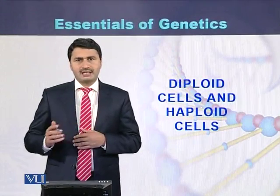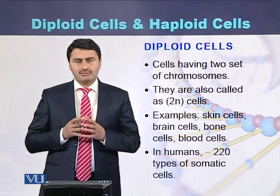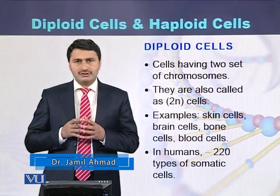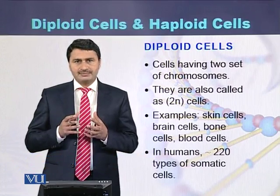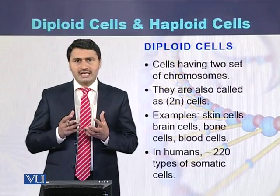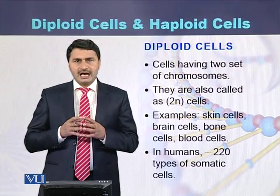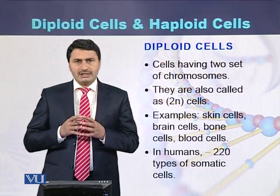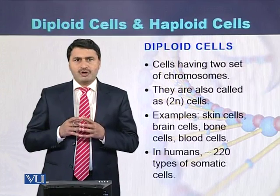Diploid cells and haploid cells. Cells having two sets of chromosomes are called diploid cells. These cells are also called 2N cells. Body cells such as skin cells, bone cells, and blood cells are all diploid in nature. In the human body there are approximately more than 220 different types of somatic cells, and these somatic cells are diploid cells.